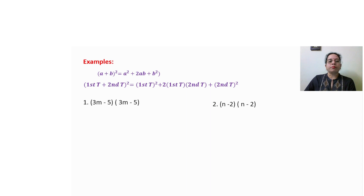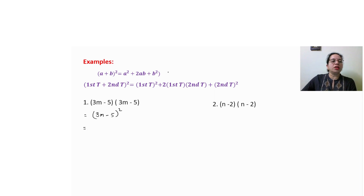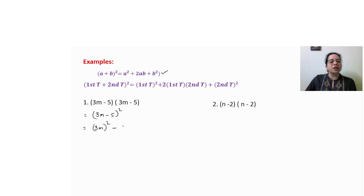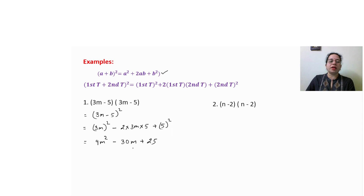Let us start with the example (3n minus 5) times (3n minus 5), which gives (3n minus 5) whole square. We will use the identity — writing the identity is compulsory each time. So: first term whole square minus 2 into first term into second term plus second term whole square gives 9n square minus 30n plus 25. All three are unlike terms, so this is the answer.